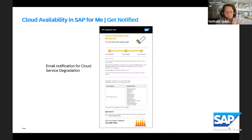Here's an example of a notification email for a cloud service degradation. At the top you see which service it concerns, then the status — in this case: issue identified, status update, and issue resolved. It also describes the impact on your system, the duration, and all information on the affected system. Each notification type has its own template — customized for maintenance, major upgrade, disruption, or degradation — tailored to the kind of event that affected your system.